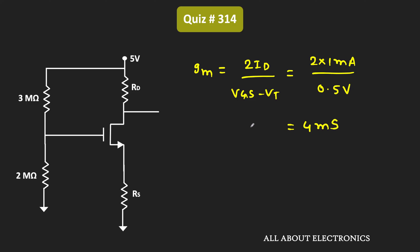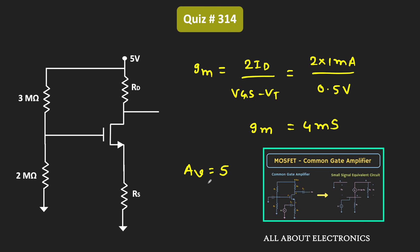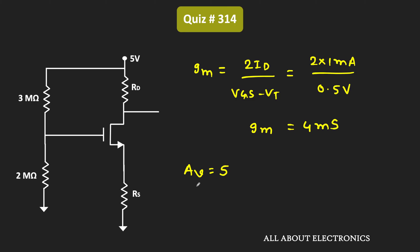We have been given that the voltage gain of this common gate amplifier is 5. As covered in the previous video on common gate amplifiers, the voltage gain is gm × RD. So gm × RD = 5.